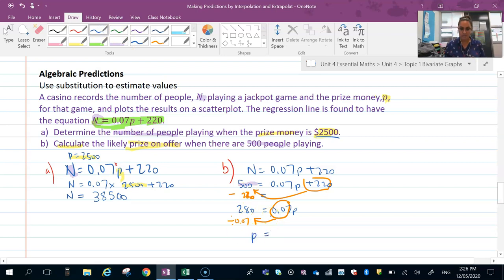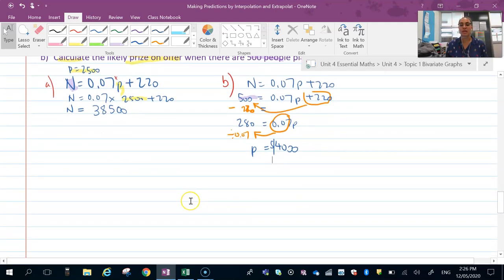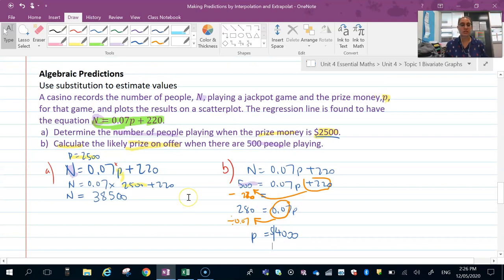That's going to give us P equals 280 divided by 0.07, which gives us $4,000 in prize money that is likely to be on offer when there are 500 people playing. That's what you're essentially doing: substituting the numbers in like when one variable equals this, what will happen to the other variable, and determining whether it's done via algebra. What you're essentially doing is making predictions with a mathematical model.